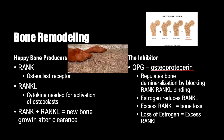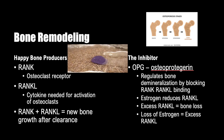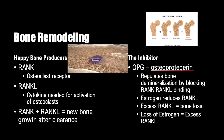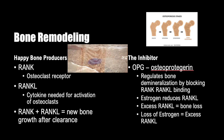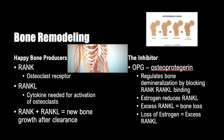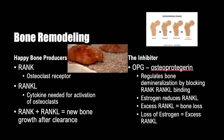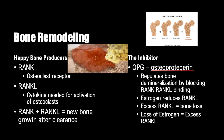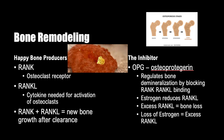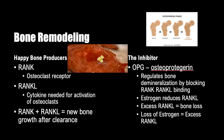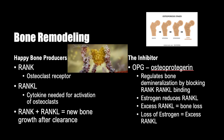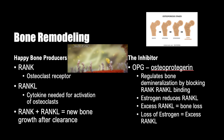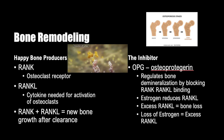We have happy bone producers: RANK and RANKL, and osteoclasts. RANK binds to RANKL and osteoclasts to promote new bone growth. Remove old bone via osteoclasts so osteoblasts can build the matrix. The inhibitor — a great supervillain name — is OPG. OPG stops RANK from binding to RANKL and reduces bone demineralization.